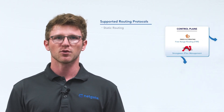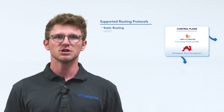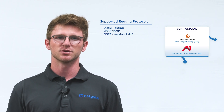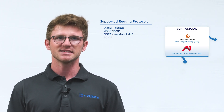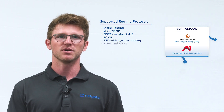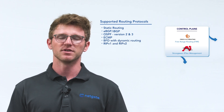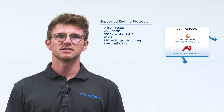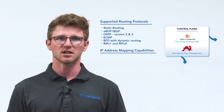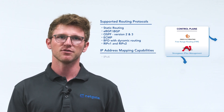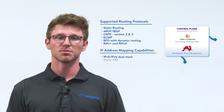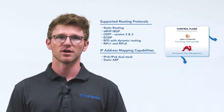Tensor supports static routing, EBGP, IBGP, OSPF v2 and v3, ECMP, BFD with dynamic routing, and RIPv1 and RIPv2. Tensor covers requisite IP address mapping capabilities, including IPv4, IPv6 dual stack, static ARP, and VRF lite.